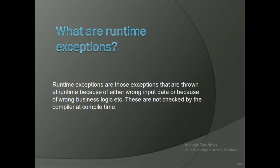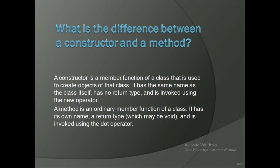What are runtime exceptions? Runtime exceptions are those thrown at runtime because of either wrong input data or wrong business logic; these are not checked by the compiler at compile time. What is the difference between a constructor and a method? A constructor is a member function of a class used to create objects; it has the same name as the class itself, has no return type, and is invoked using the new operator. A method is an ordinary member function; it has its own name, a return type which may be void, and is invoked using the dot operator.